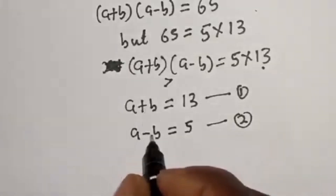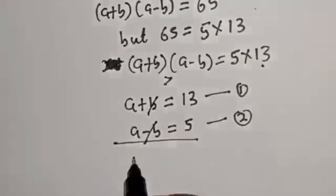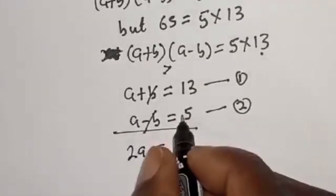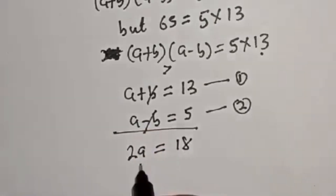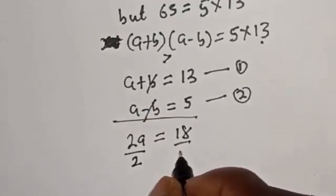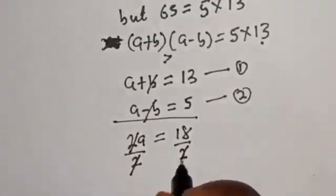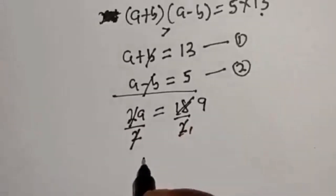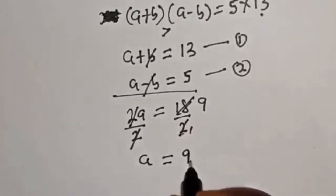Let's add equation 1 and equation 2 together. Adding them, the b terms cancel, giving 2a equals 13 plus 5, which is 18. Dividing both sides by 2, we get a equals 9.